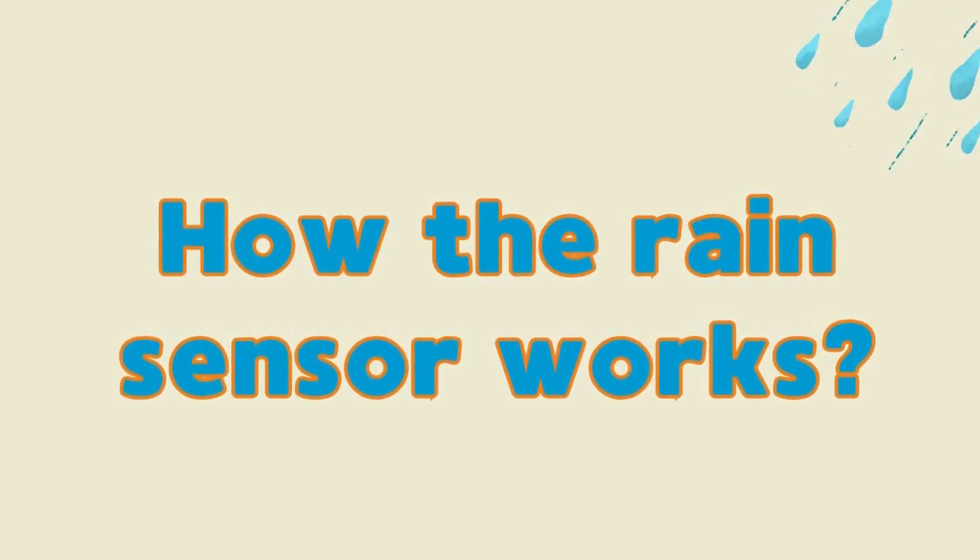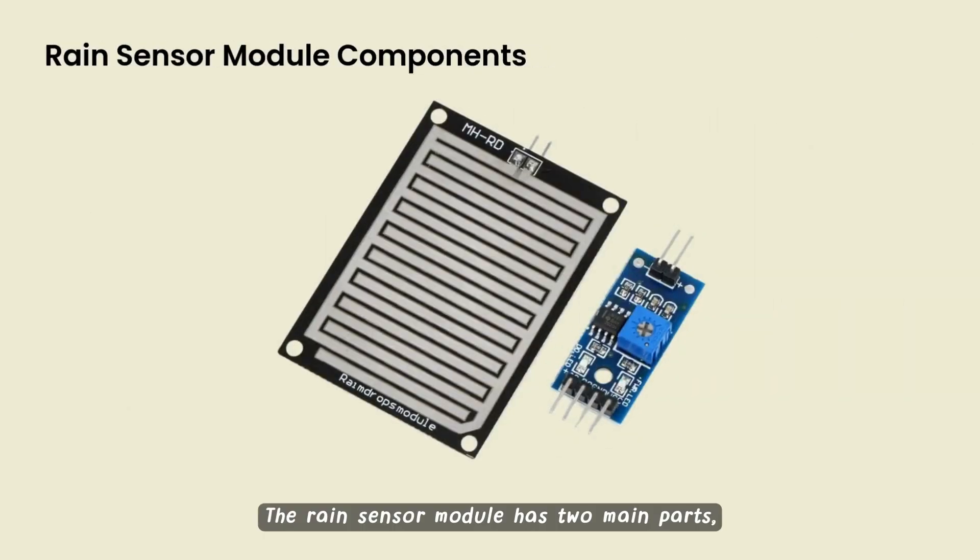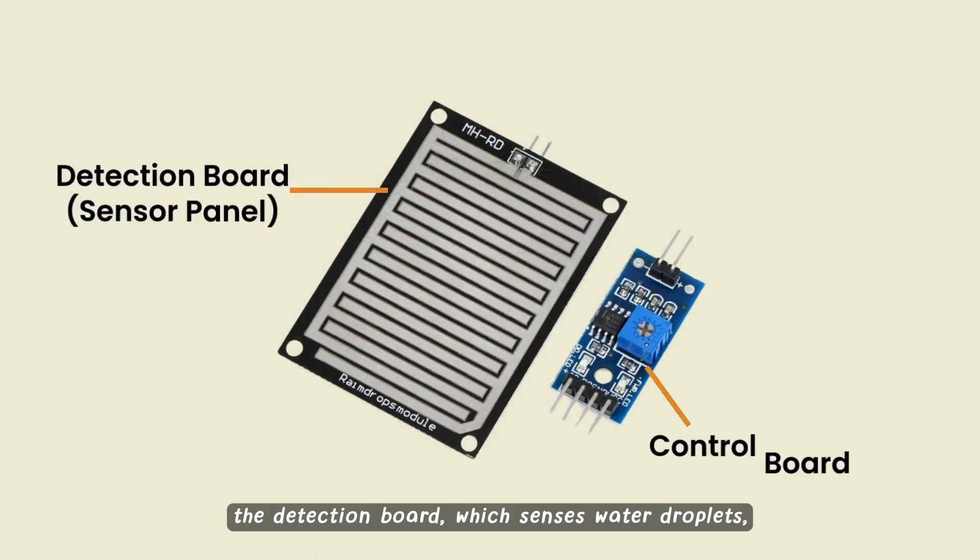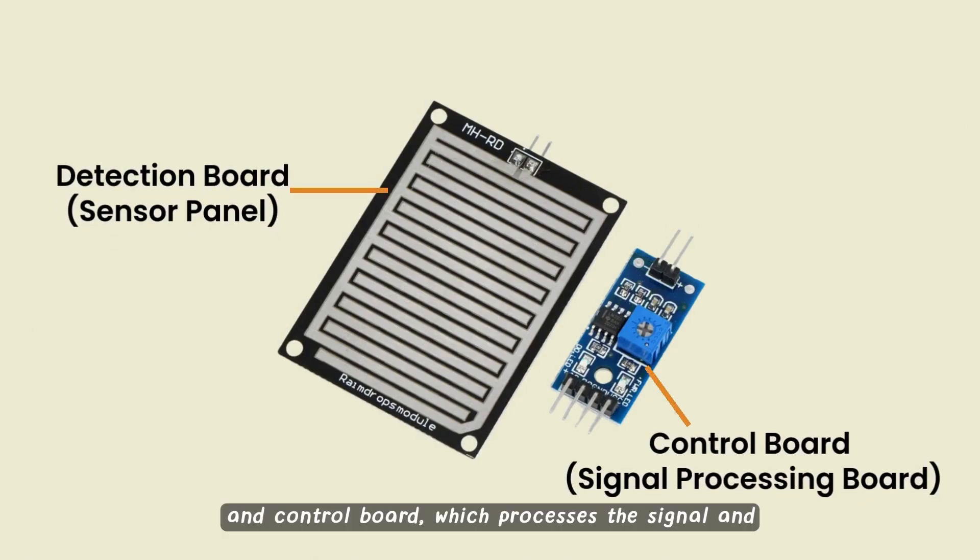How does it detect rain? Let's see. The rain sensor module has two main parts, the detection board, which senses water droplets, and the control board, which processes the signal and sends it to the microcontroller.